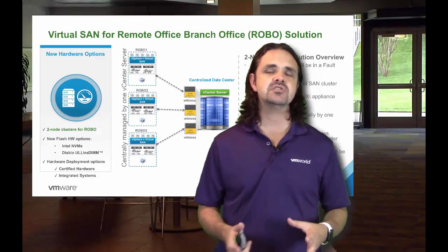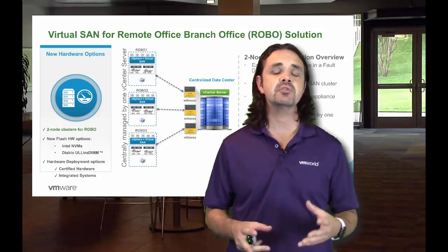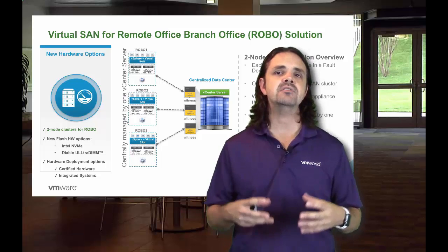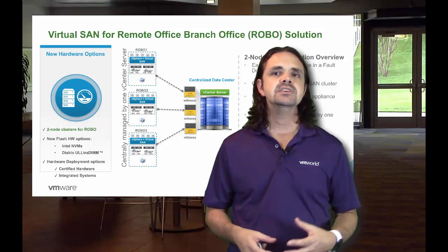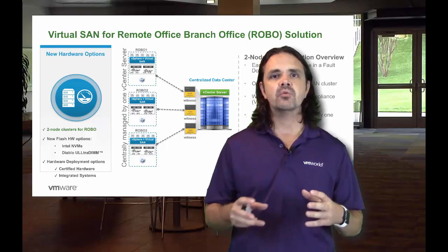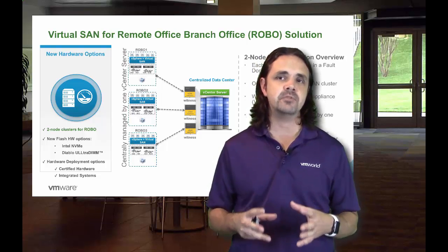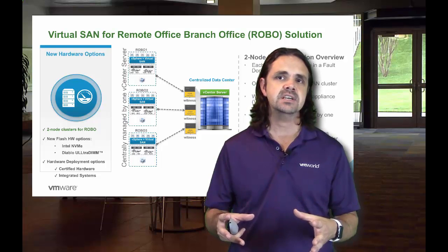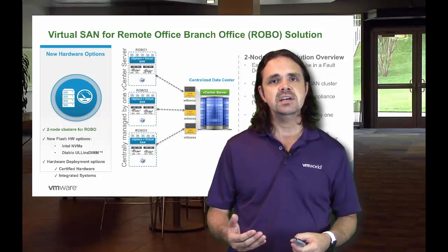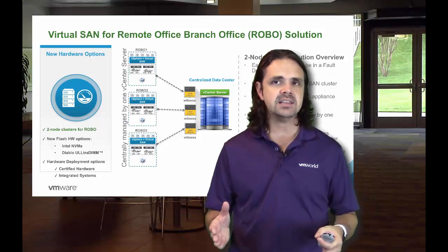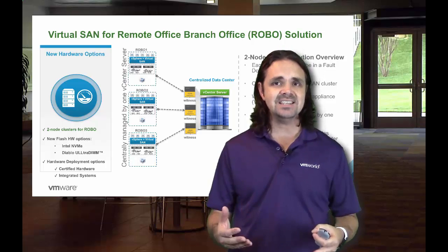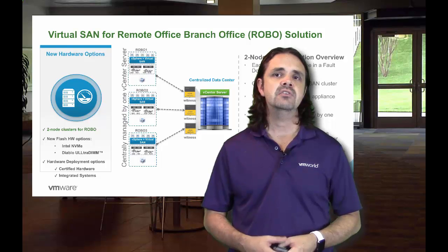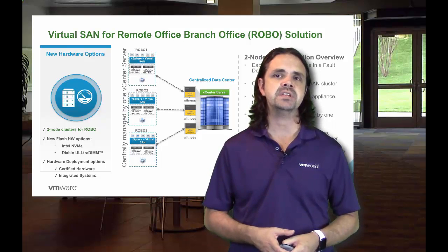The first thing to realize when we're talking about remote or branch office — and I really can't underline this enough — is that this is a use case meant for ROBO type workloads. A ROBO workload is limited to 25 virtual machines per remote or branch office, and so a lot of the information here is going to be targeted directly at that. The information on the next slide about sizing is going to talk specifically about what we have for these remote or branch office common types of implementations.